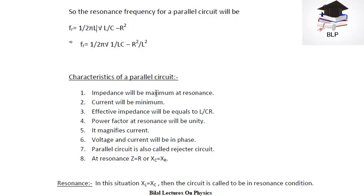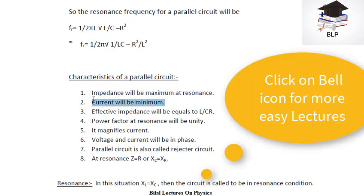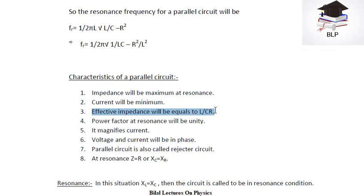Let's now look at some properties of this parallel rejector circuit. The very first one is that impedance will be maximum at resonance — at resonance condition, our impedance Z will be maximum. The second property is that current will be minimum, because our impedance equals the resistance. Third, the effective impedance will be equal to L over CR. And the power factor at resonance will be unity, because our phase angle is equal to zero degrees.